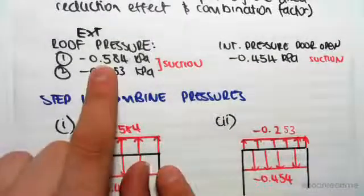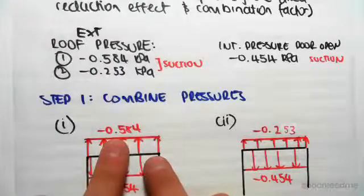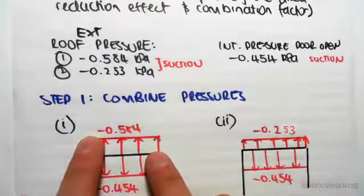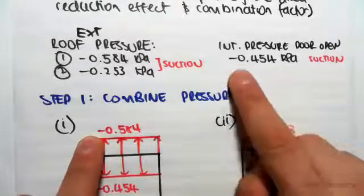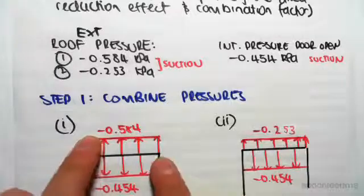We have a roof pressure in case one of minus 0.584 kPa, so that's a suction pushing it up. And then we also have an internal pressure of minus 0.454 kPa which is also a suction, but internally the suction is going to pull down on the roof.